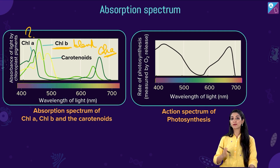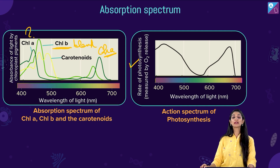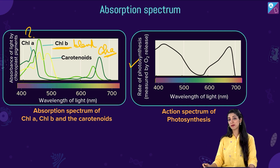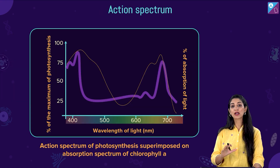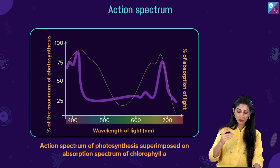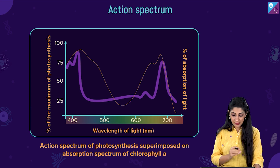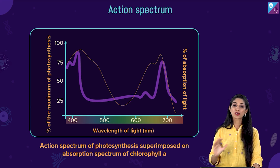After that comes the action spectrum. The action spectrum simply tells you the comparative rate of photosynthesis — x-axis is wavelength of light, y-axis is the rate of photosynthesis. The action spectrum shows a lot of overlapping with the absorption spectrum of chlorophyll A and B, and is again maximum in the blue and red regions of the visible spectrum. This overlapping signifies that chlorophyll A and B are majorly involved in photosynthesis.